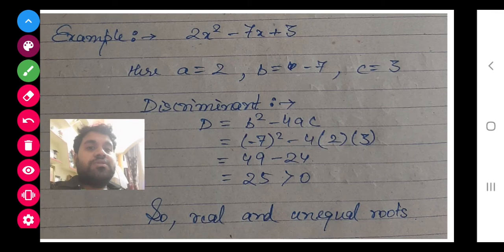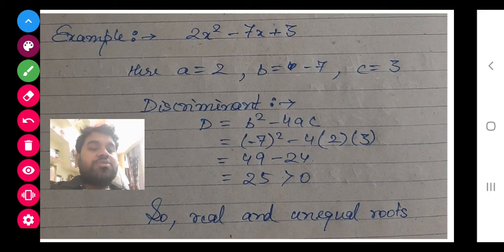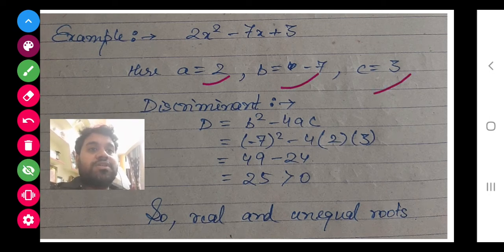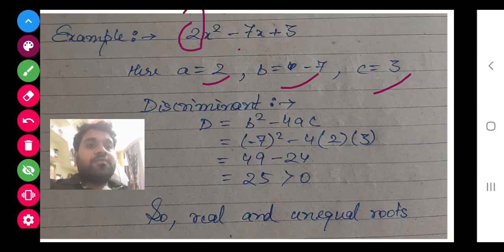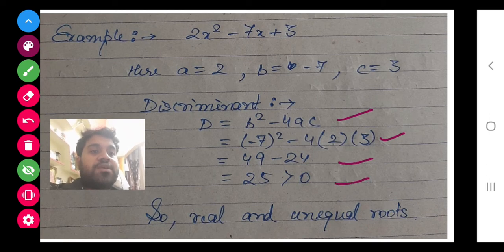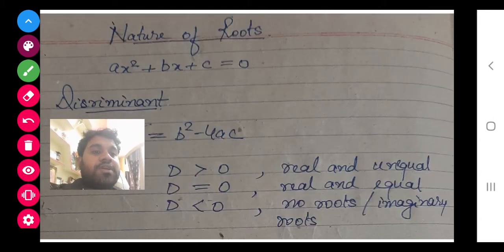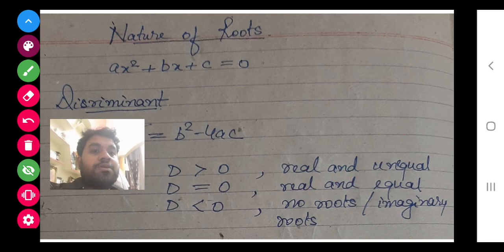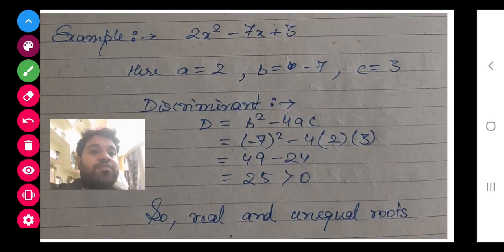Let's move to one example. This example says: 2x² - 7x + 5 — does it have real roots or not? First of all we have to find out a, b, and c. After comparing, I have solved the discriminant and I am getting 25, which is greater than zero. So this means we have real and unequal roots.